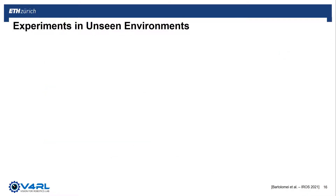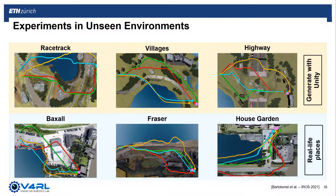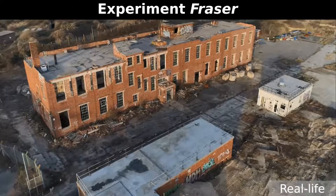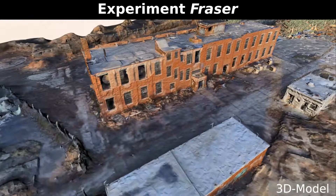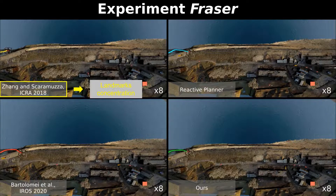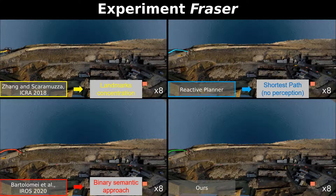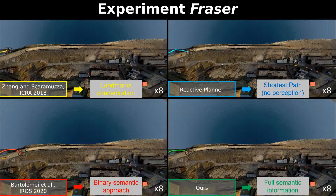The learned policy is then tested directly without additional fine-tuning in a set of models not experienced at training time. There are two sets of models: three of them are created using the game engine Unity, while three other models are generated using photogrammetry from real-life places. The video shows the experiment and test runs in the second set of models, and here we show the resemblance between the real-life place and the 3D reconstruction. We compare our approach against three other planners. The planner by Zangger Karamuzza uses landmark concentration as the main metric to decide whether a region is reliable for state estimation. The approach by Bartolomei et al. uses semantic information but associates a fixed binary importance to each semantic class. The reactive planner is also based on this planner but does not consider perception at all and tries to find the shortest path to the destination. Finally, we show the path flown by the robot using our learned policy that employs the full semantic information to make a decision.